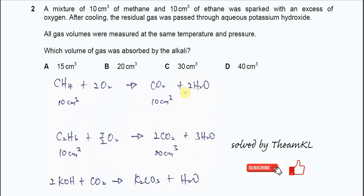Question 2. A mixture of 10 cm³ of methane and 10 cm³ of ethane was burnt with oxygen and the residual gas passed through potassium hydroxide.